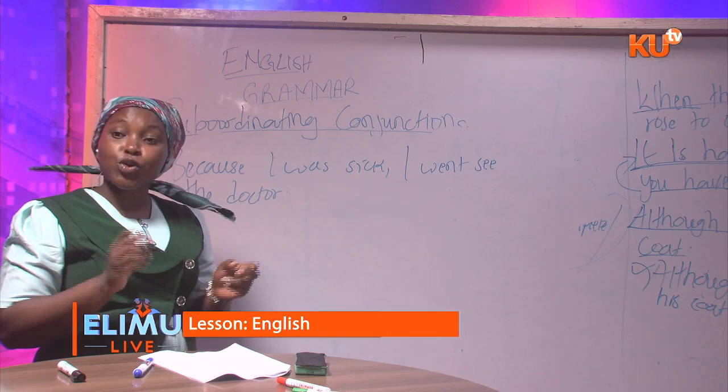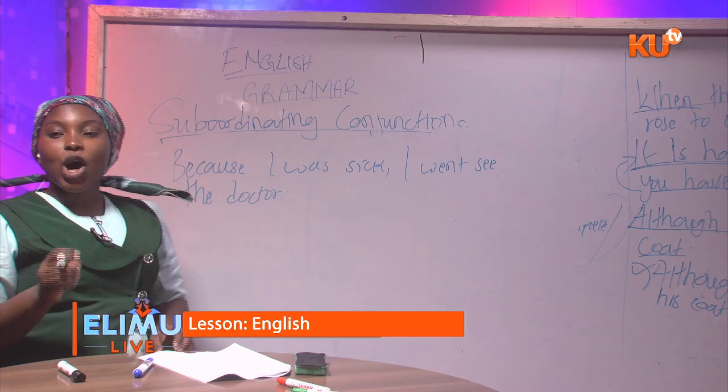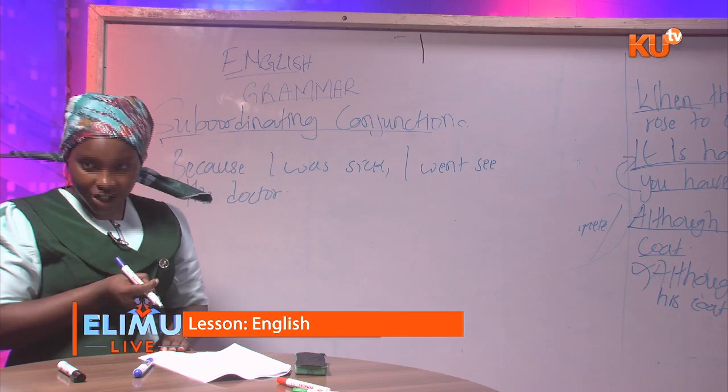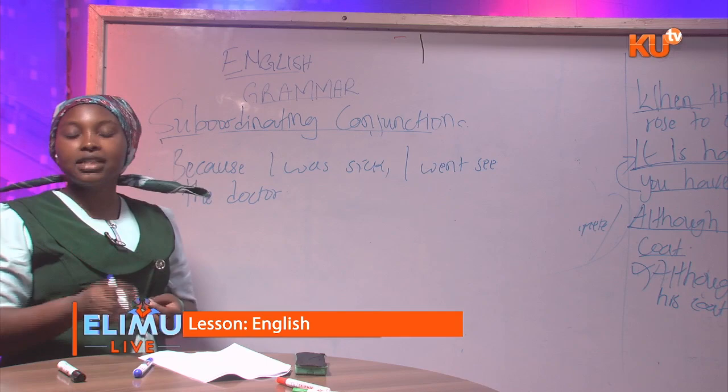To make your work easier: from where you have the subordinating conjunction up to where you have a comma, that is the subordinate clause. The rest is the independent clause. That is how you make your work easier.